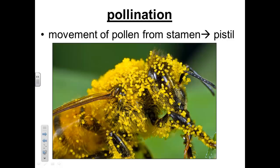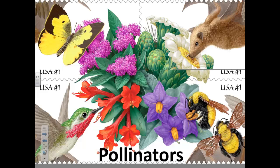Pollination can involve the stamen and pistil of the same plant or of two different plants. Here are some pictures of pollinators: hummingbirds, butterflies, bats, and bees.